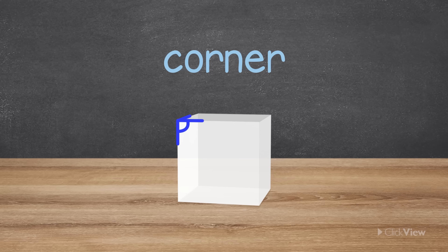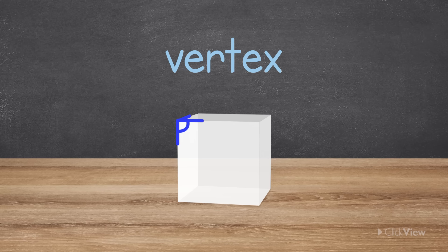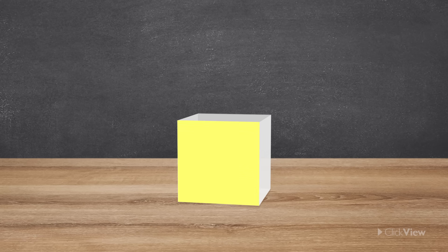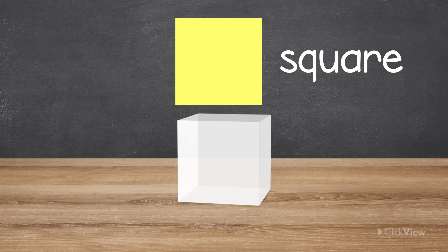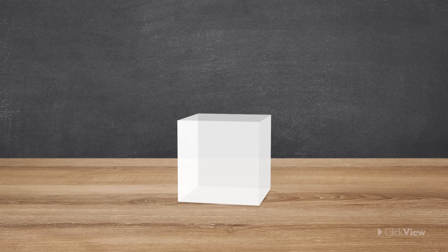A corner can also be called a vertex. The faces of 3D shapes often contain 2D shapes that you may already know. Maybe you can recognize some of these 2D shapes as we go through a few examples. Here are some 3D shapes and their features.